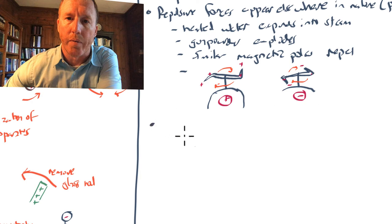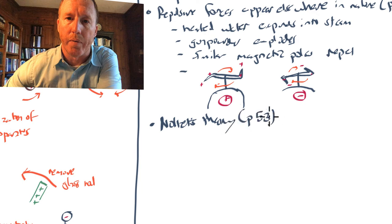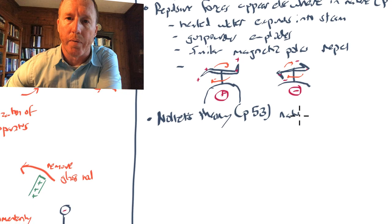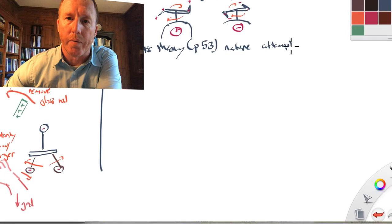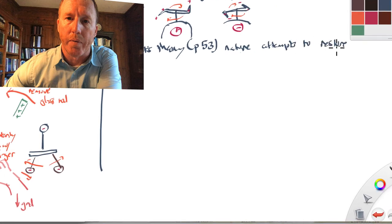He gives these as more examples of repulsive forces, with the spinning vane specifically involving electrical phenomena. Remember that Nolet's theory — that quantities of different densities mutually attract each other in order to restore equilibrium — is what Franklin is criticizing here. Benjamin Franklin says this theory is not really well-founded. On page 53, he concludes that Nolet's theory that nature attempts to restore equilibrium is, at the very least, incomplete. It works to some extent, but it's incomplete.